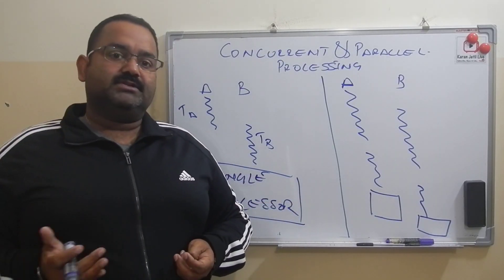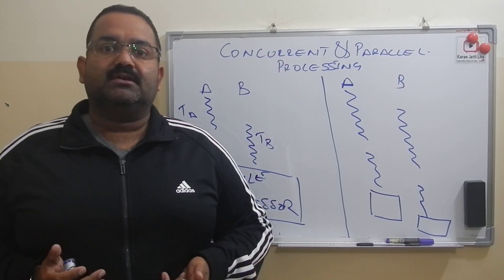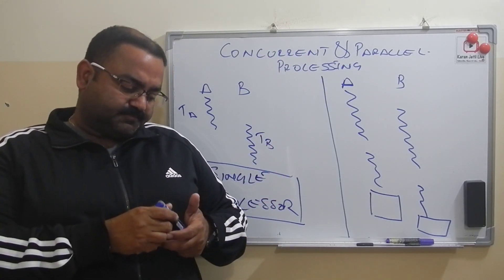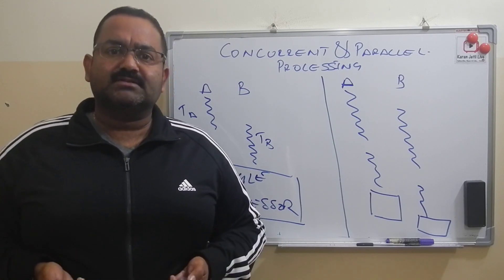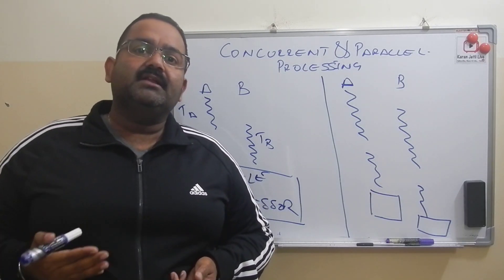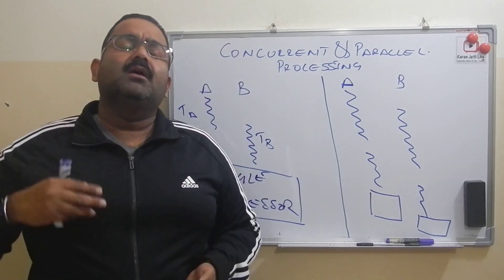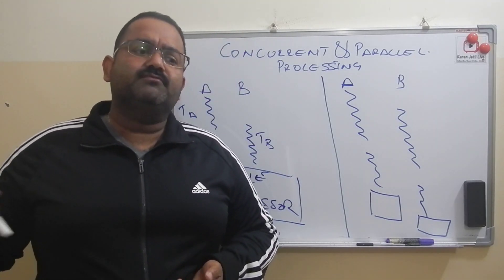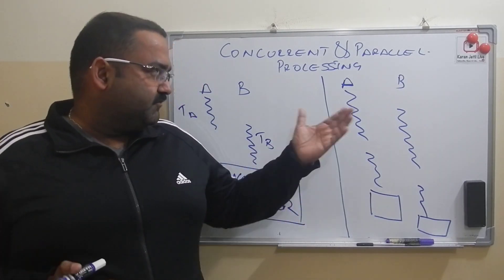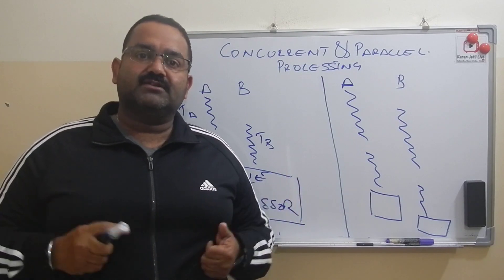With concurrent processing, the main advantage is we have a high performance system. When multiple threads can execute at the same time, automatically the system throughput and performance go up, but it also leads to other problems which we are going to discuss in the next lecture. So guys, if you like our lectures please subscribe to my channel, and thanks for watching.